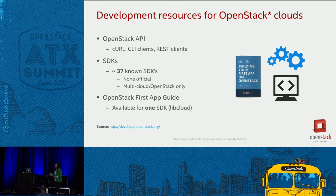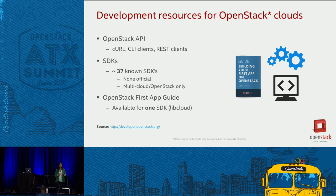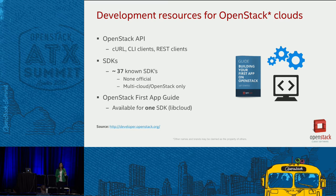These are the available resources about development in the OpenStack developer portal: basically the OpenStack API reference, SDKs, and the OpenStack first app guide, better known as MyFirstApp. There are 37 available SDKs for languages like Python, Java, C#, and so on, but none of them are official — they are not OpenStack projects. And MyFirstApp is the only sample app available, and it's only published for one SDK, LibCloud.